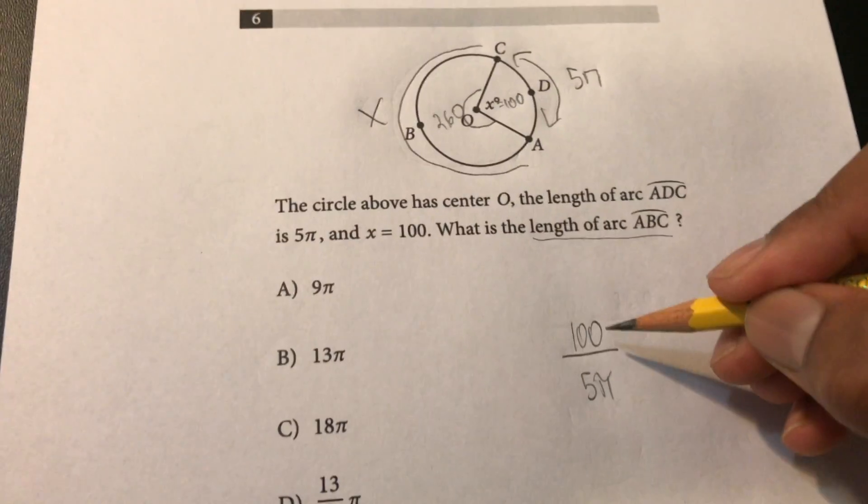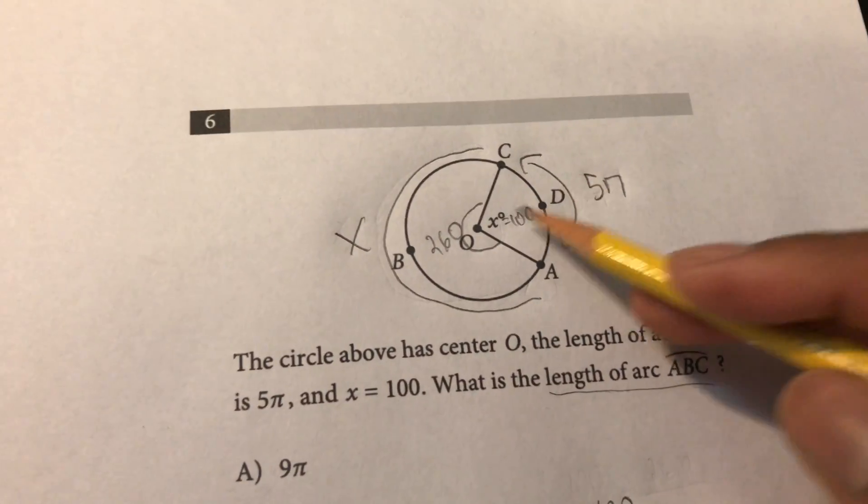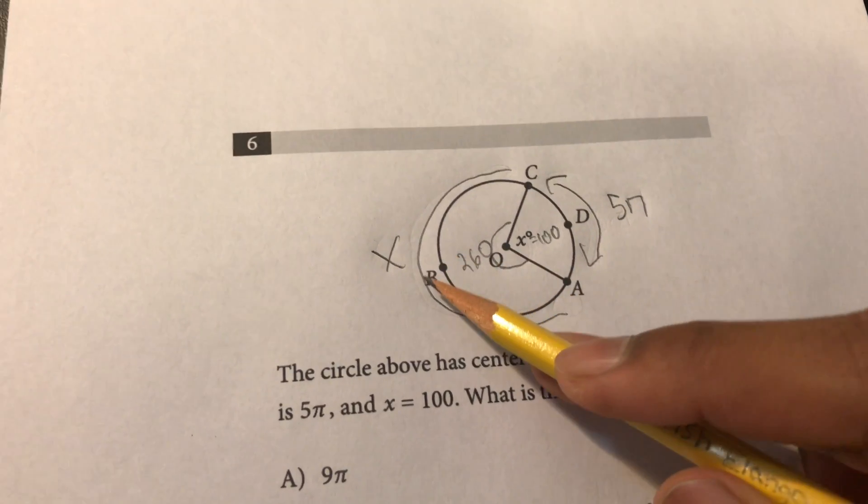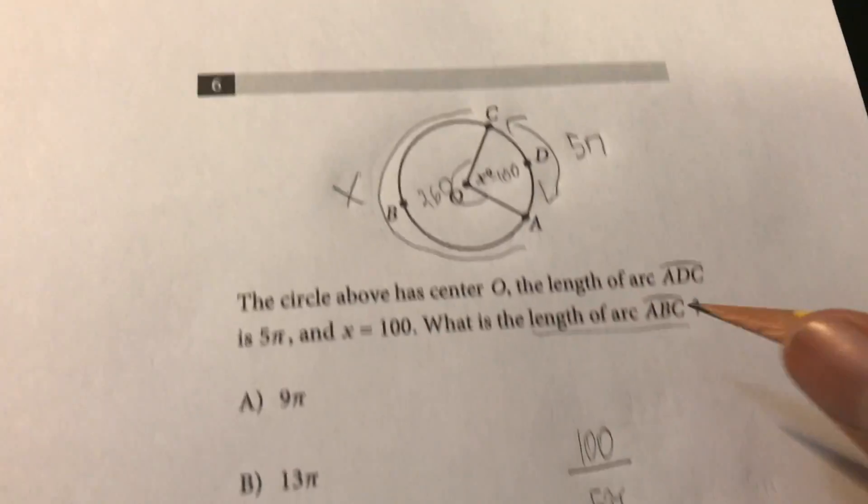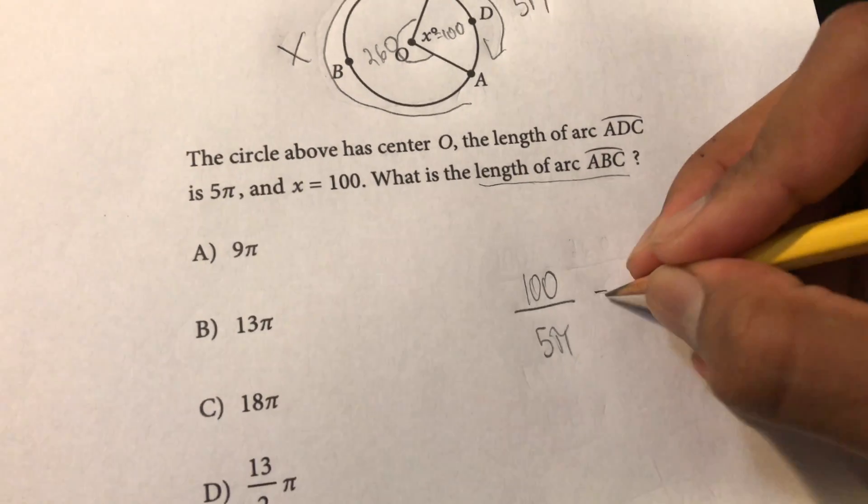Now if 100 correlates with 5π like this then we know that 260 has to correlate with x or arc ABC so using that we'll set up a ratio.